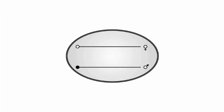Usually all cells get half of the genetic information from the mother and half from the father, as one chromosome comes from the mother and the other one from the father. Most of the genes are expressed from the chromosome of both parents. This is called biallelic expression.